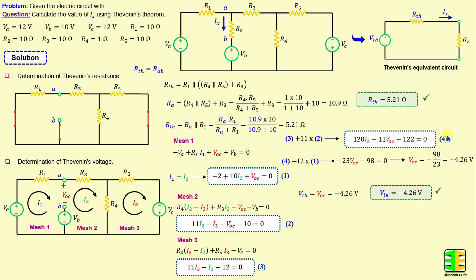After finishing the calculation of RTH and VTH, we can calculate Ix. Ix is given by VTH over R2 plus RTH. If we replace R2, RTH, and VTH with their numerical values, we obtain Ix is equal to negative 280 milliamps.